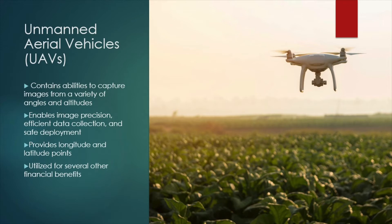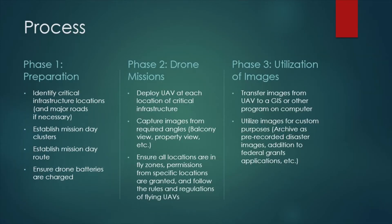Additionally, UAV imaging contains several other benefits, such as utilizing the imagery as pre-disaster records of critical infrastructure locations, which can then be used for post-disaster federal grant applications. This particular feature displays the financial benefits of UAVs and the imagery produced and captured during drone missions. The process of utilizing UAVs for critical infrastructure planning can be split up into three phases: Phase 1 preparation, Phase 2 drone missions, and Phase 3 utilization of images.